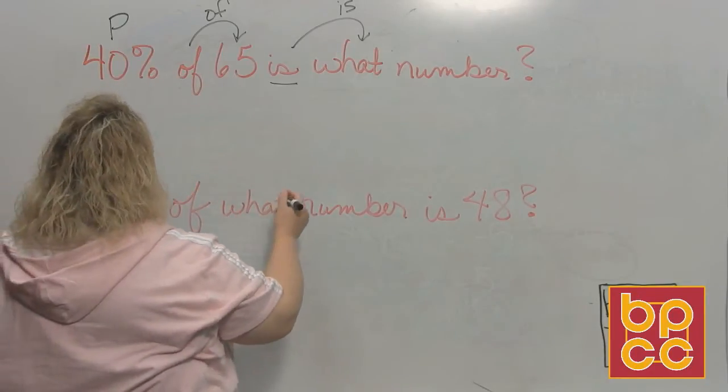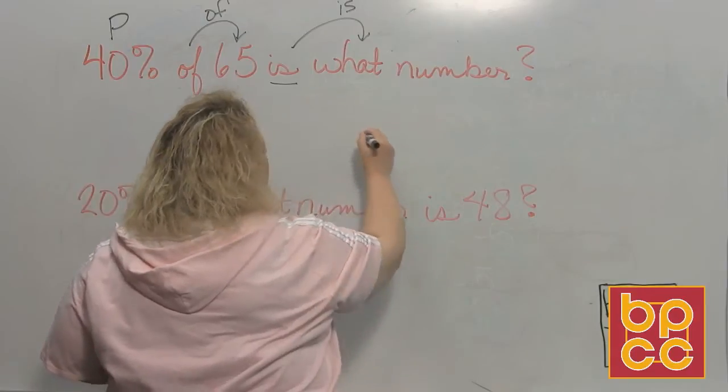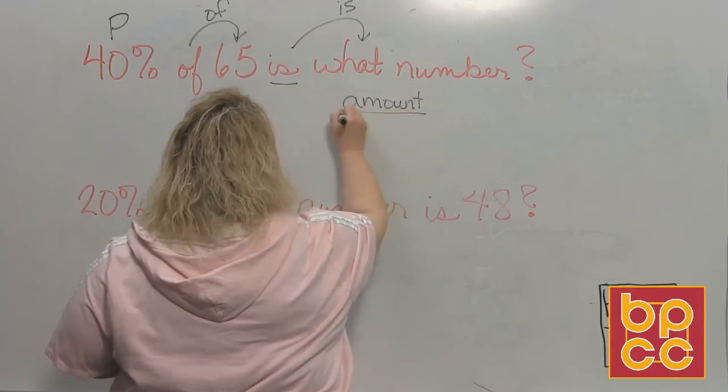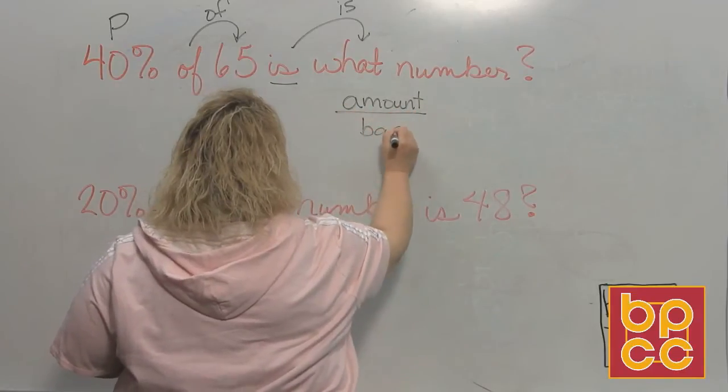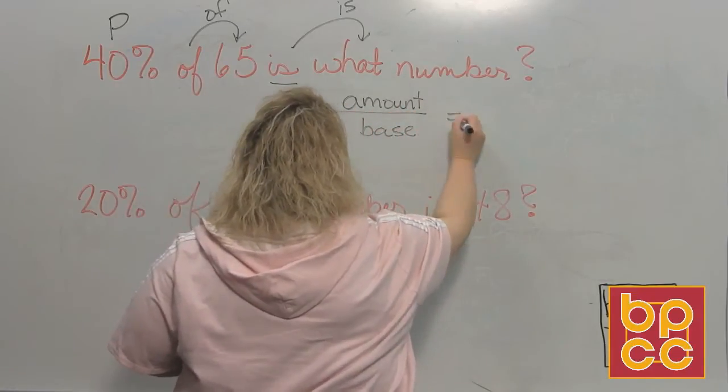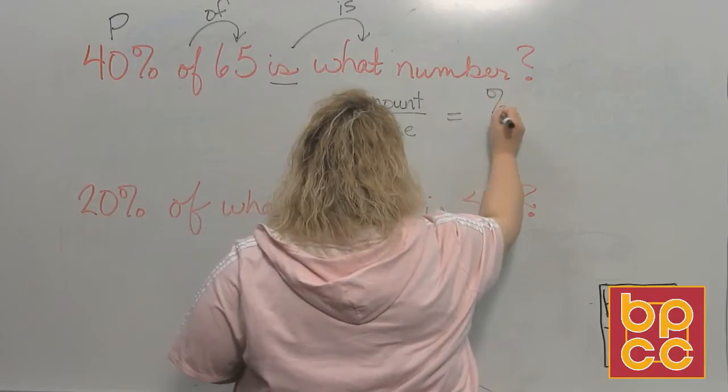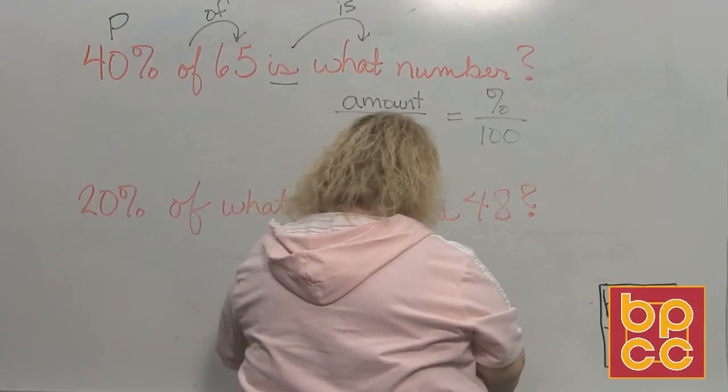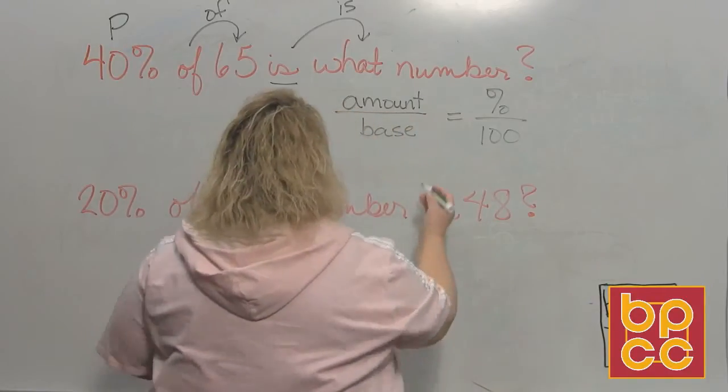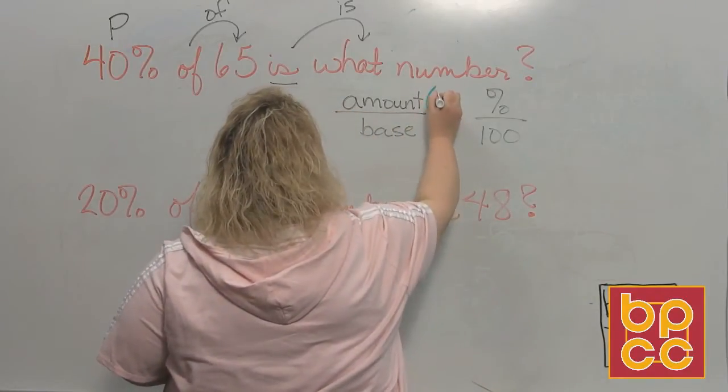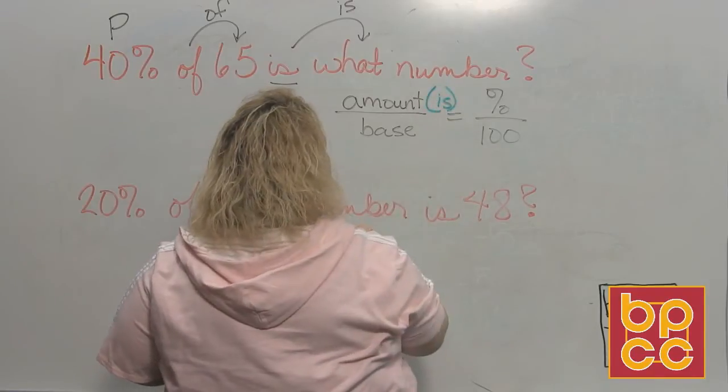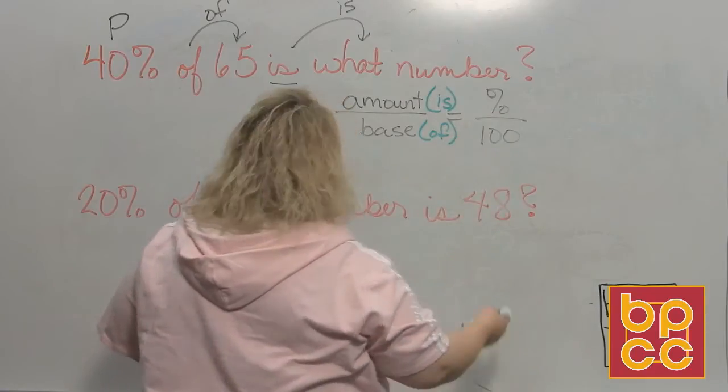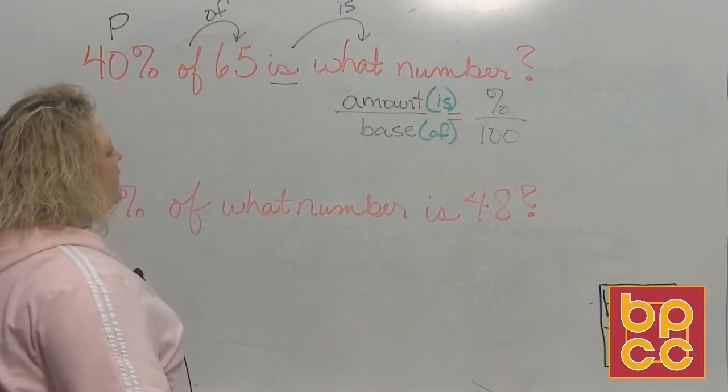So let's set up the proportion. We have amount divided by the base is equal to your percent over 100. When you go to fill these in, amount is your 'is' word, base is your 'of' that you're looking for, and then percent is always just percent. So let's fill in what we have.